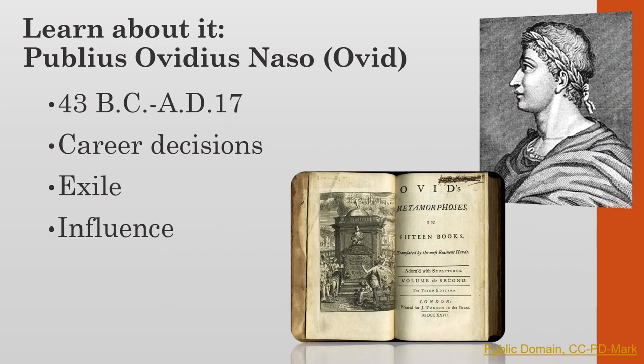Before we dive into Pyramus and Thisbe, let's learn about Ovid. On March 20th, 43 BC, Publius Ovidius Nesso, better known to modern readers as Ovid, was born in Solno, 90 miles from Rome.